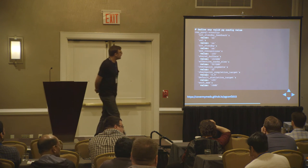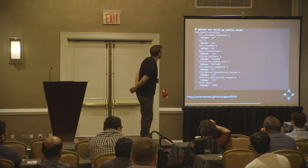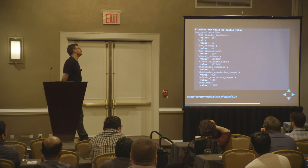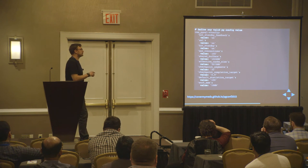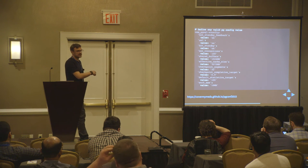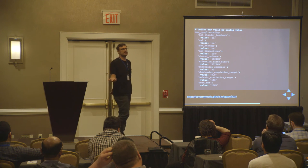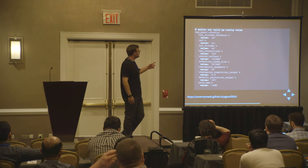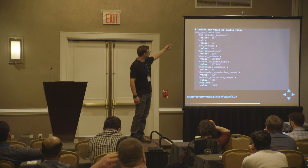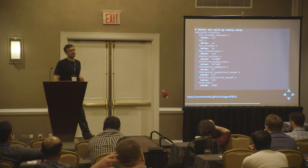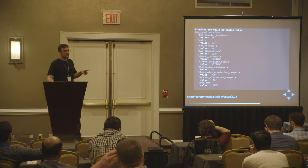A question from the audience: what would you put in besides the value — could you just say 'hot_standby on'? Value is actually a parameter in one of the Puppet Labs resources. There's a Puppet Labs resource called postgresql::config, and the parameter is called 'value'. The resource name would be 'hot_standby', and then you give a value to the 'value' parameter — it's a built-in. It would make more sense to show that part directly.